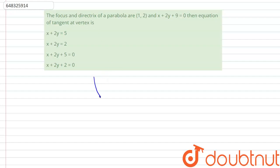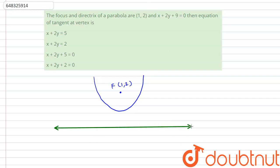Let us say that the parabola looks something like this. This is our parabola and the focus is given to us as (1, 2) — this is the focus of the parabola. The directrix is also given, that is x + 2y + 9 = 0. Let us draw that — let us say this is the directrix, and the equation of the directrix is x + 2y + 9 = 0.